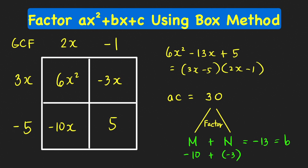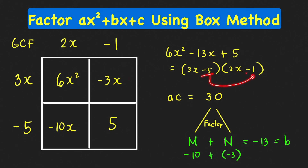You can check by the FOIL method that this is the correct factorization: 6x squared, then the sum of the outer and inner terms gives negative 3x minus 10x, which is negative 13x, and negative 5 times negative 1 equals positive 5. Now I want to warn you that when you use this method, you need to make sure that the value of a is positive. If a is negative, we only need to add one more step, which I'll show in the third example.